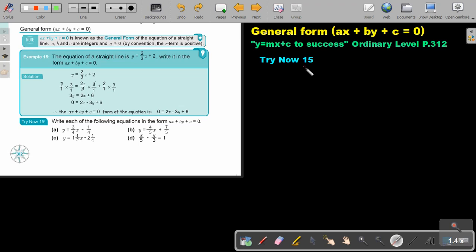In this video we are going to focus on the general form of a straight line. You will find this on page 312 in the Namibia Ordinary Level Mathematics textbook, y equals mx plus c to success.